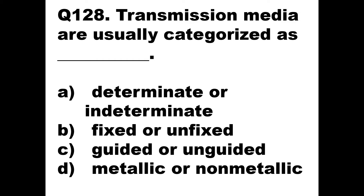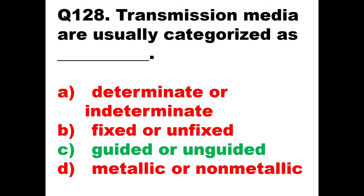Question 128: Transmission media are usually categorized as dash. Transmission media has two types: guided, which is a physical wire type of connection, and unguided, which is wireless. Option C is the correct one — guided or unguided media.